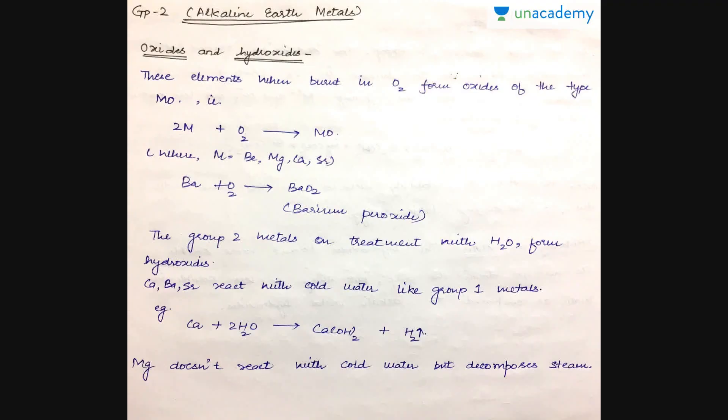Hi everyone. In this section we will learn about the alkaline earth metals and how their properties vary in comparison to those of alkali metals. The alkaline earth metals are mainly the elements which belong to group 2 of the periodic table: beryllium, magnesium, calcium, strontium, barium, and radium. Radium is a radioactive metal and is mainly studied with radioactive elements only.